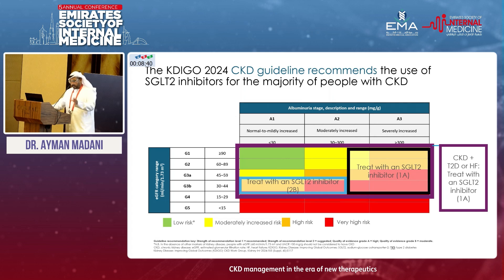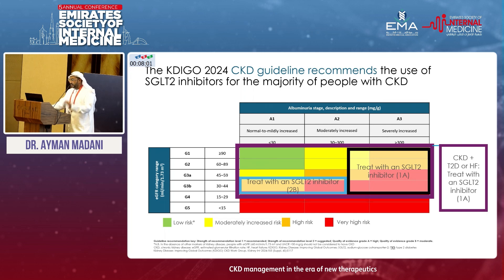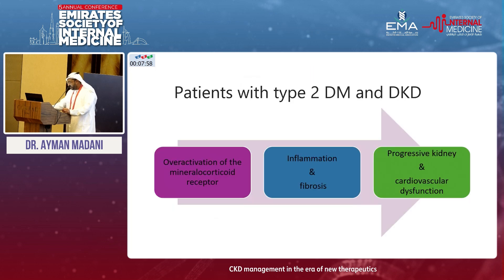To summarize SGLT2 inhibitor use in CKD patients, going back to the heat map: essentially all CKD patients can be treated with SGLT2 inhibitors, especially if they have type 2 diabetes or heart failure — evidence 1A. The black box group has been studied mainly by DAPA-CKD; the blue box group was studied by EMPA-KIDNEY. At the end of the day, we believe it's a class effect, so don't feel pressured to choose one over the other unless you are comfortable doing so.